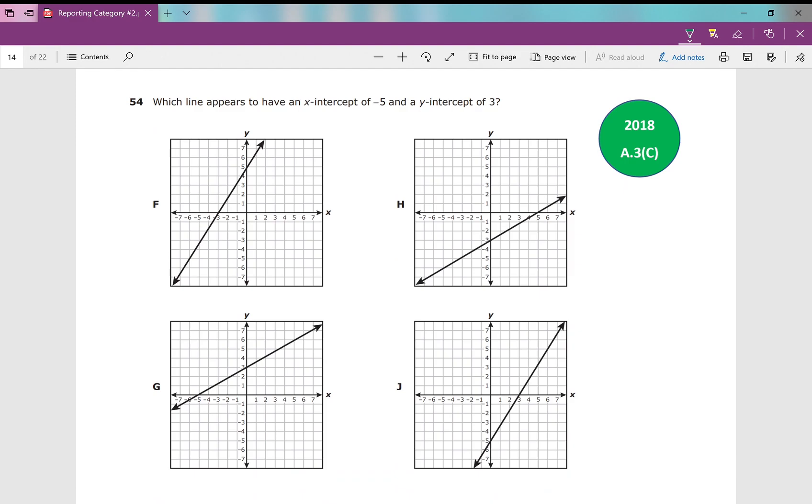Number 54: Which line appears to have an x-intercept of negative 5? Here's my x-axis. And a y-intercept of 3. So, an x-intercept of negative 5 and a y-intercept of positive 3. Which one of these has that? G, negative 5 on the x-axis, positive 3 on the y-axis. And that concludes your review for reporting category number 2 from the 2018 version of the Algebra 1 EOC.